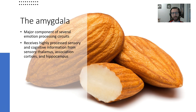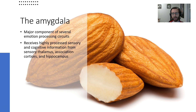The amygdala receives highly processed sensory and cognitive information from areas like the sensory thalamus, association cortices, and hippocampus. Basically, lots of different sensory information comes in from many routes and converges in the amygdala. It also enjoys reciprocal connections with the hippocampus, which is really important for learning and memory, making it very well connected to our memory centers.